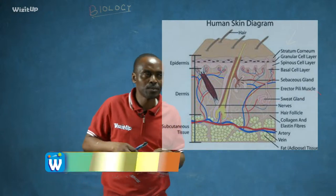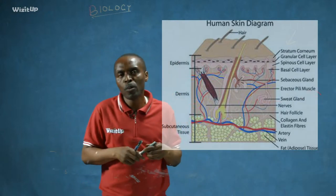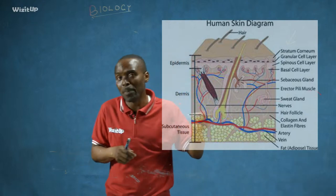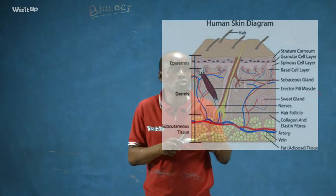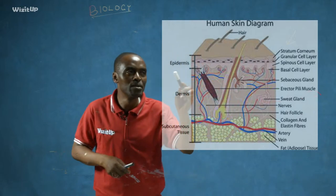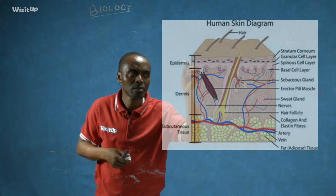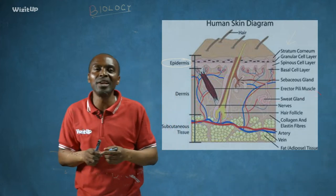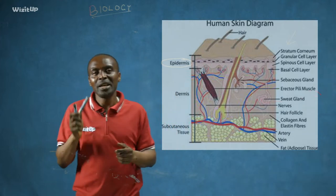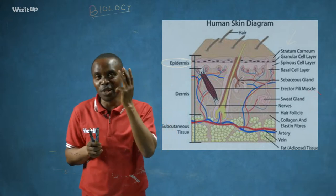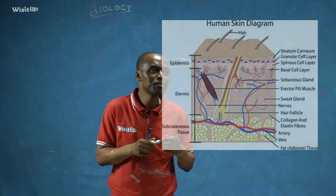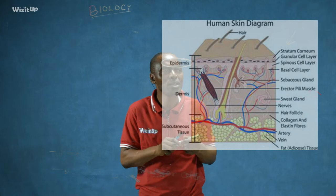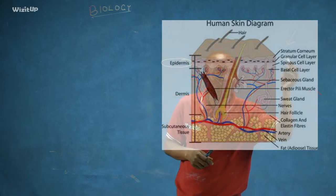The skin is made up of two layers. The first layer, or the uppermost layer, is what we call the epidermis. The epidermis is the upper layer of the mammalian skin.